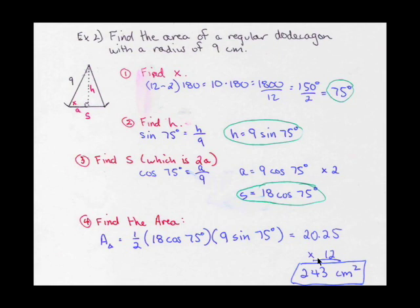Multiplying by 12, and that's because I am talking about a dodecagon, so there are 12 triangles all the way around. Multiplying by 12, I get 243 centimeters squared. Thanks for tuning in and we'll see you next time.